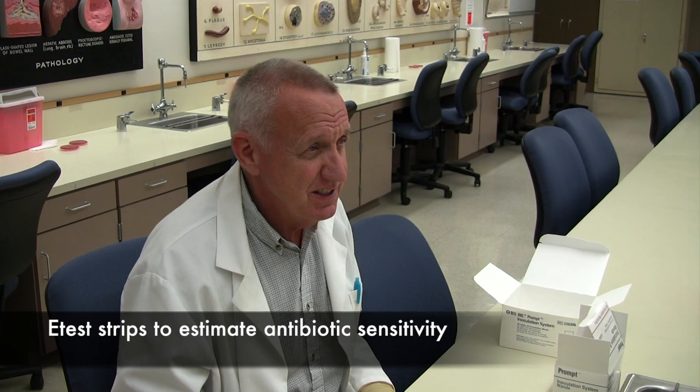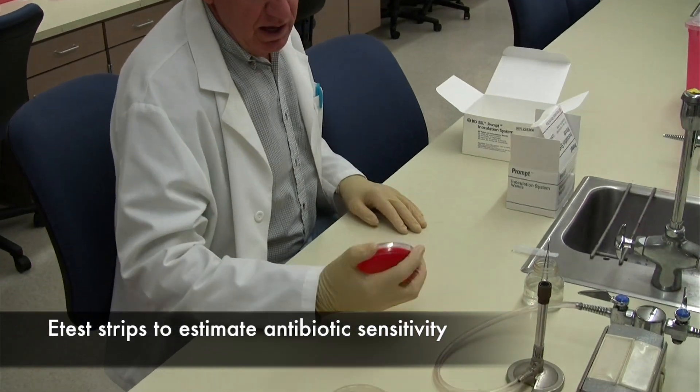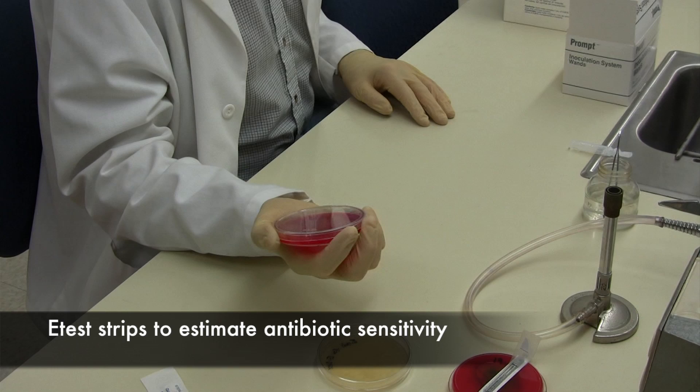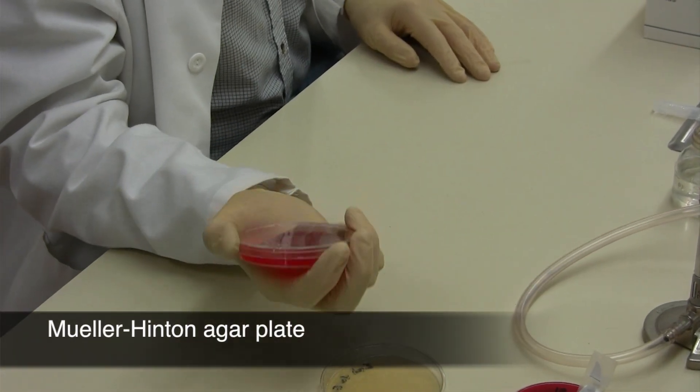I'm going to demonstrate how to do antibiotic susceptibility testing using the e-test system. To do this, you need to make a lawn of the bacteria to be tested, and you want to use a Mueller-Hinton agar plate.